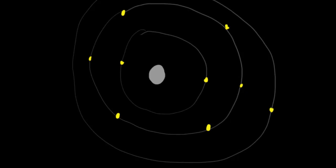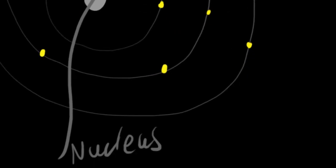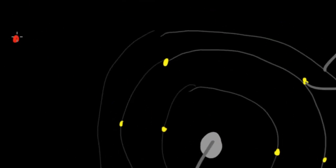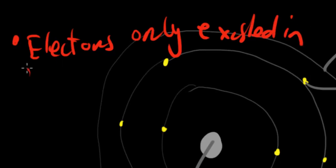The first principle Niels Bohr came up with regarding his model of the atom was that electrons only existed in fixed orbits — and nowhere in between. This is what his model proposed: that electrons only existed in these fixed orbits or shells, not anywhere else in between.